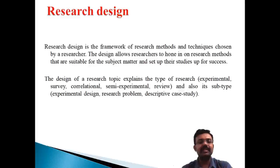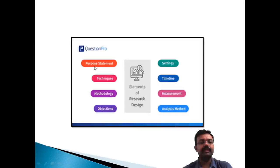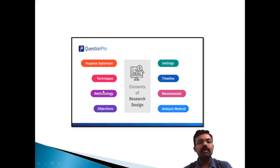Let's see what are the basic elements in research design. The first element is the purpose of the statement, the second one is the technique, the third one is the methodology, and others include objectives, settings, timelines, measurement, and analysis of the method. These are the important elements of research design, and to complete the research you must go through all of them.